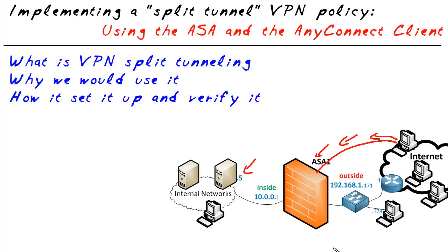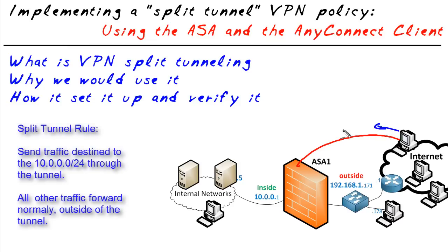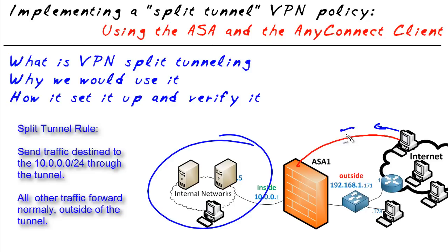By default, all that traffic would also need to go through the tunnel, and then if we configure the ASA to redirect that out to the internet with NAT, we could do that as well. But that's a lot of overhead. If our security policy allows it, we can implement something called a split tunneling policy. We have our VPN tunnel established, but we configure the VPN so that only traffic destined for a specific network should go through the tunnel, and all other traffic can go free and unencrypted out to resources like CNN or CBT Nuggets. That's the whole concept of split tunneling.